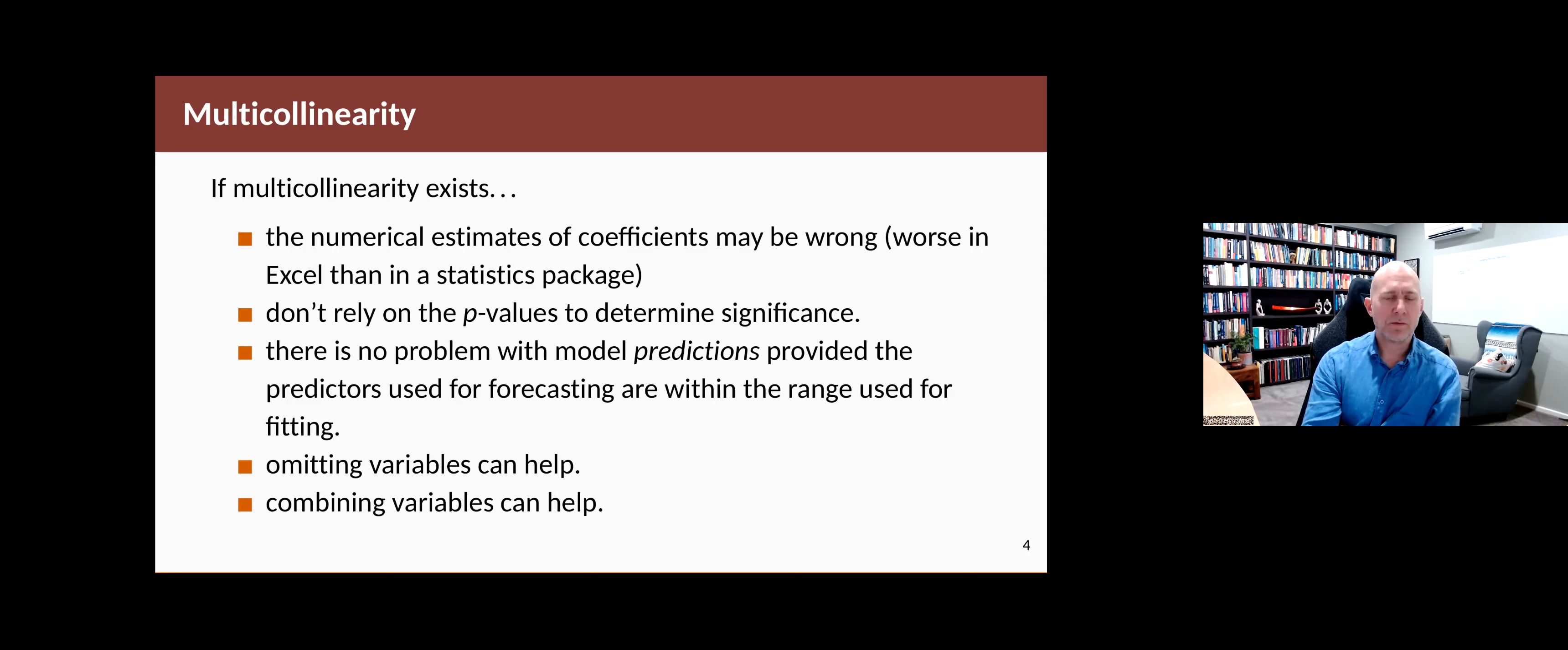If collinearity does turn out to be a problem, then there's a few ways you can deal with it. You could leave out some of the variables that are causing the problem, or you could combine them in some way. You can take an average of the two variables that are closely related. Sometimes it's useful to take an average of two related variables and the difference of the two related variables. And you don't lose any information then, but you avoid the problems of collinearity between the two predictors.